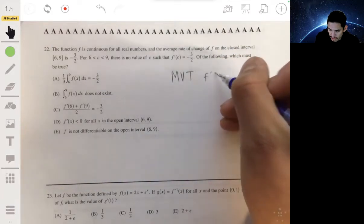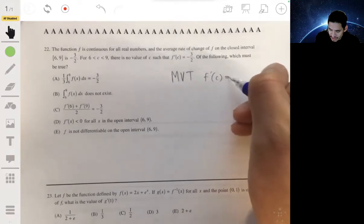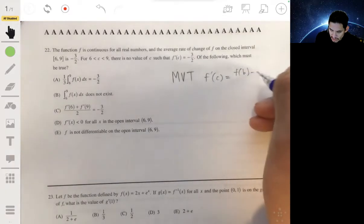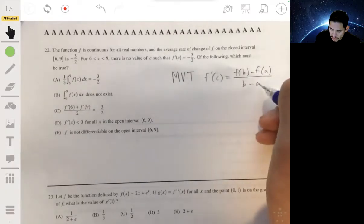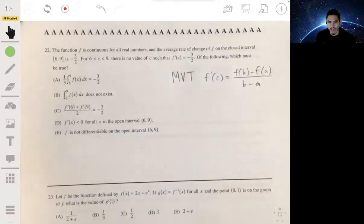Let me just write it out. f prime of c equals f of b minus f of a over b minus a. You should be familiar with that.